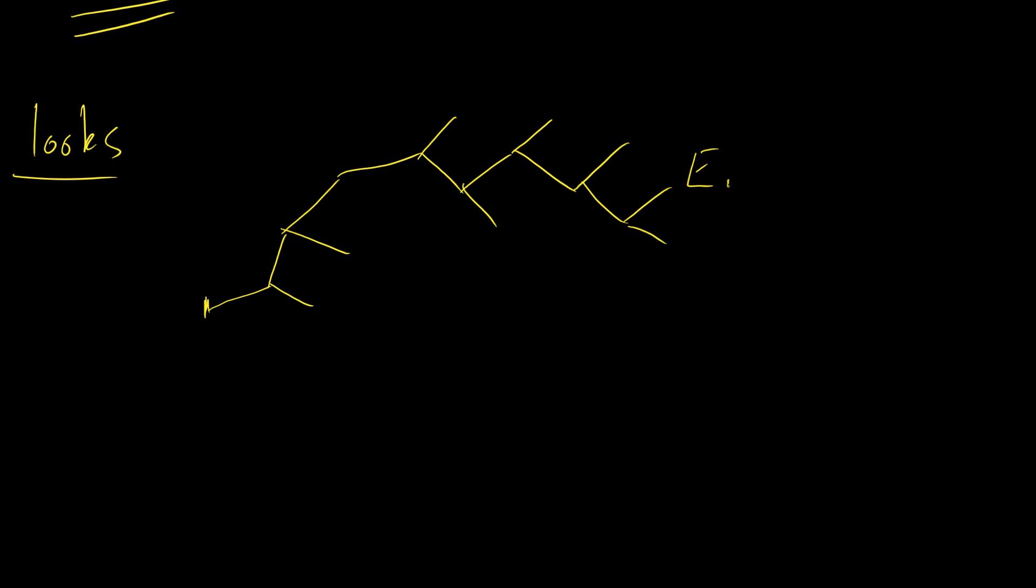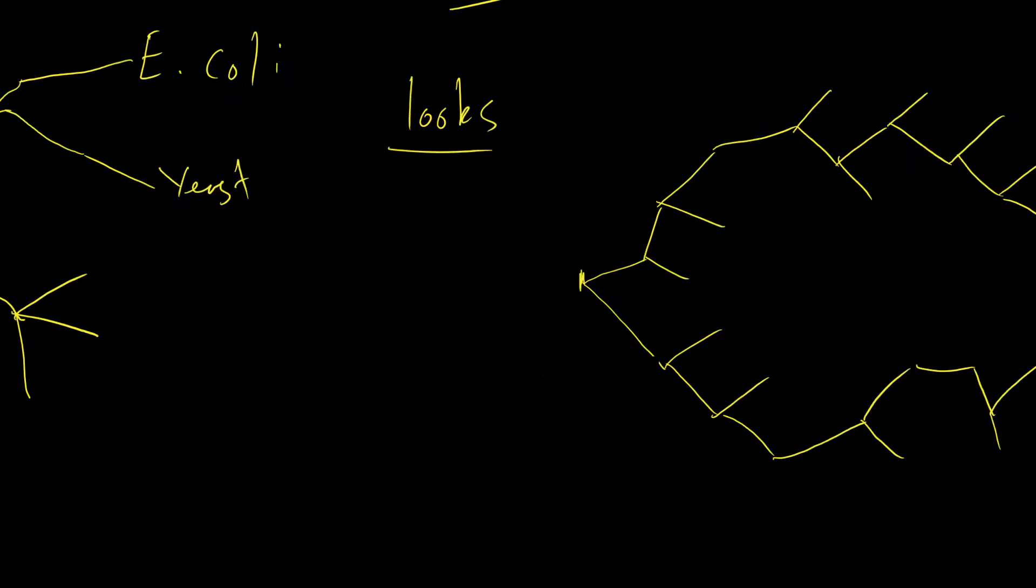And this here might be E. coli. But yeast is a very different organism to E. coli in terms of its DNA. Yeast is actually a way more complicated organism in terms of its genetics. And so that might have actually separated and you will have a tree that looks something like this. This is completely inaccurate in terms of the real-life family tree, but this gives you an example.